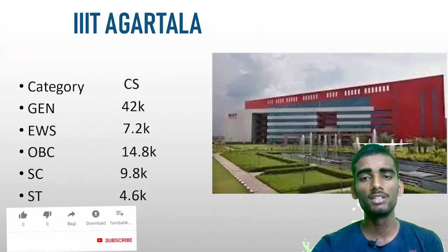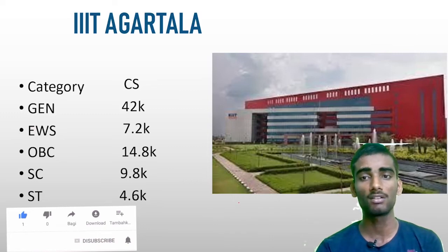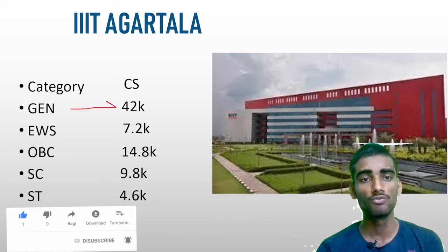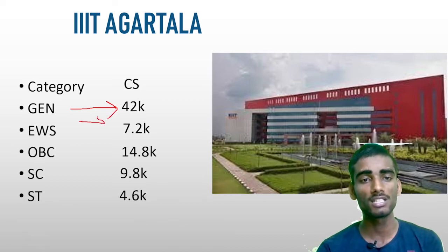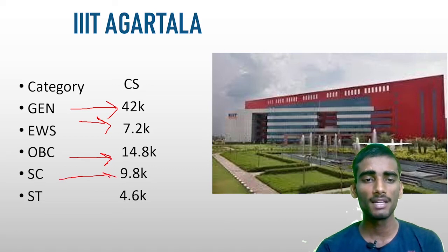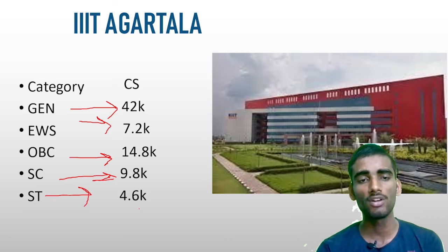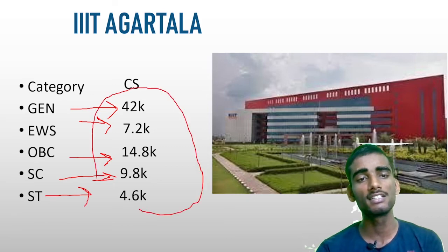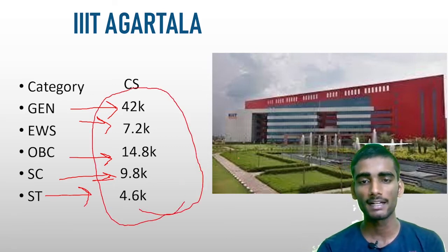Finally, IIIT Agartala — another great college with beautiful infrastructure. For General CSC: within 42k. EWS: within 7.2k. OBC: within 15k. SC: 9.8k. ST: 4.6k. Both male and female candidates can use these cutoffs. If your rank is within this range, you can easily get CSC in this college.